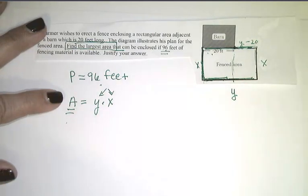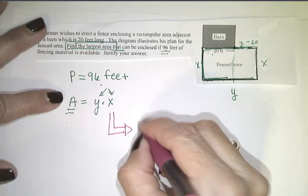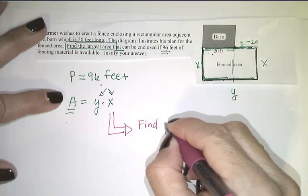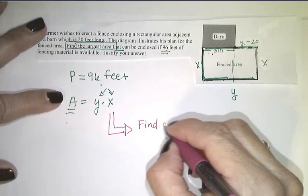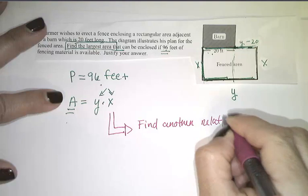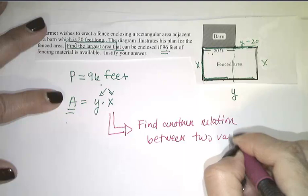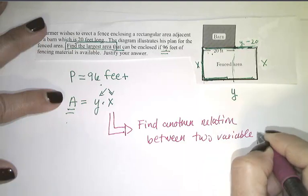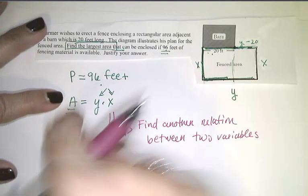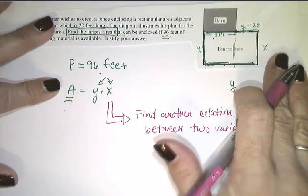So what I need to do is I need to veer off a little bit. And I need to find another equation or another relationship. Find another relation between my two variables. Okay? Because I want to be able to write one in terms of the other so that area can be a function of just one variable. But alas, I have it.